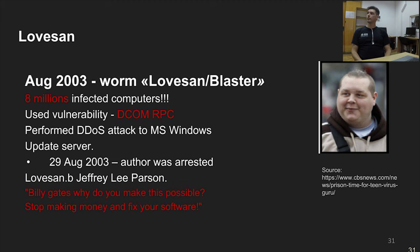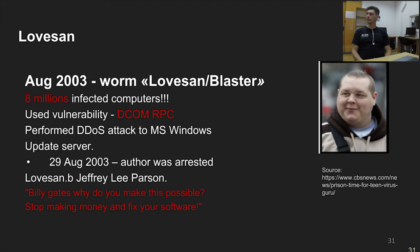In August 2003, the Blaster worm, also known as LoveSan, appeared. You can see its author Jeffrey Lee Parson on screen. The worm exploited a vulnerability in the DCOM RPC service on Microsoft Windows, managing to infect 8 million computers. Using this large botnet, the attacker launched a distributed denial-of-service attack on Microsoft's Windows Update server. Microsoft took measures to help find the hacker, and Jeffrey Lee Parson was arrested that same month, on August 29. Notably, the worm's code contained a message to Bill Gates: 'Bill Gates, why do you make this possible? Stop making money and fix your software.'